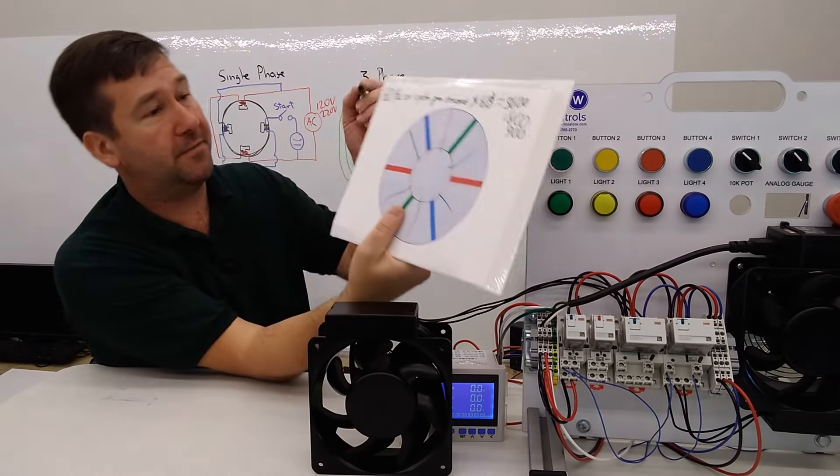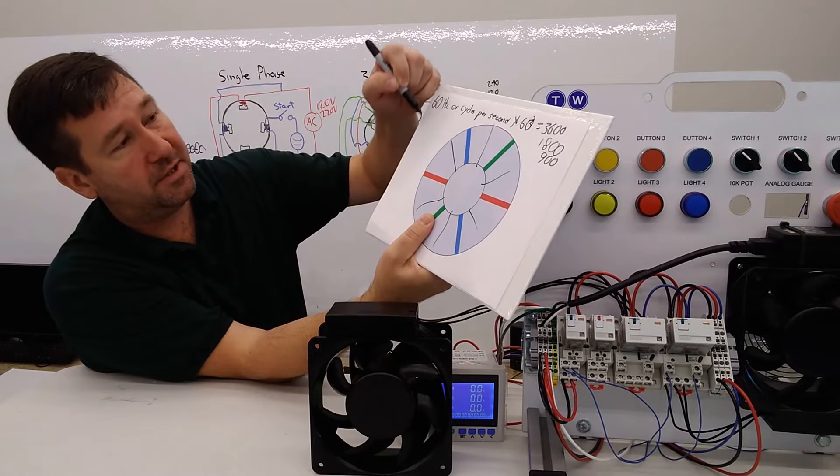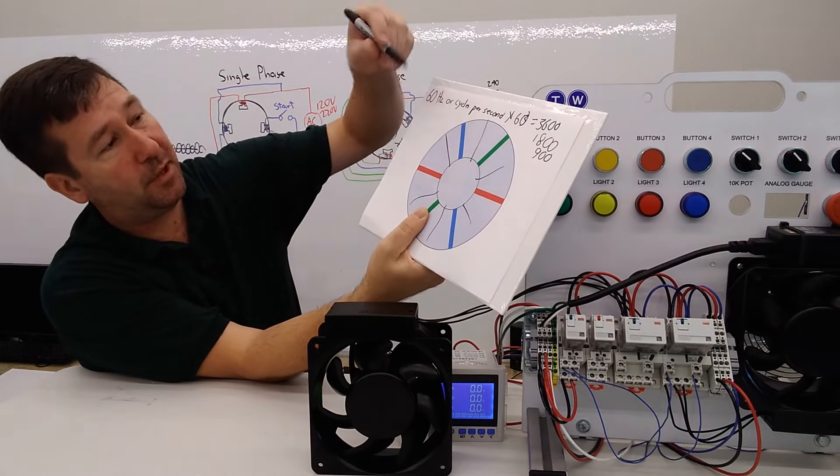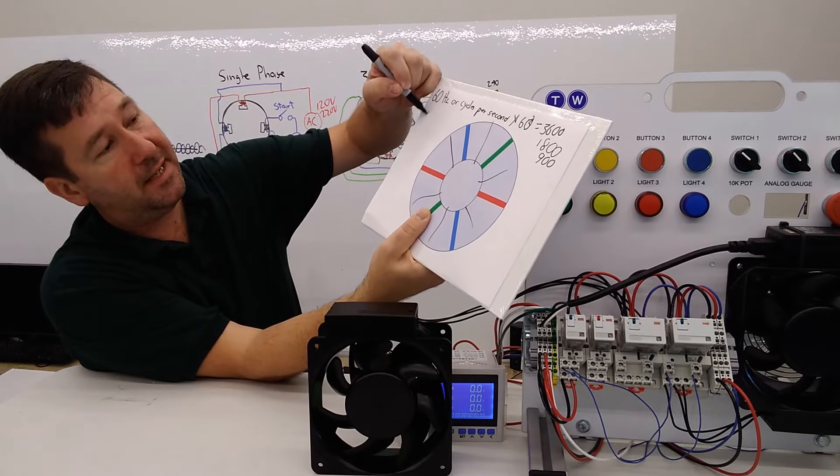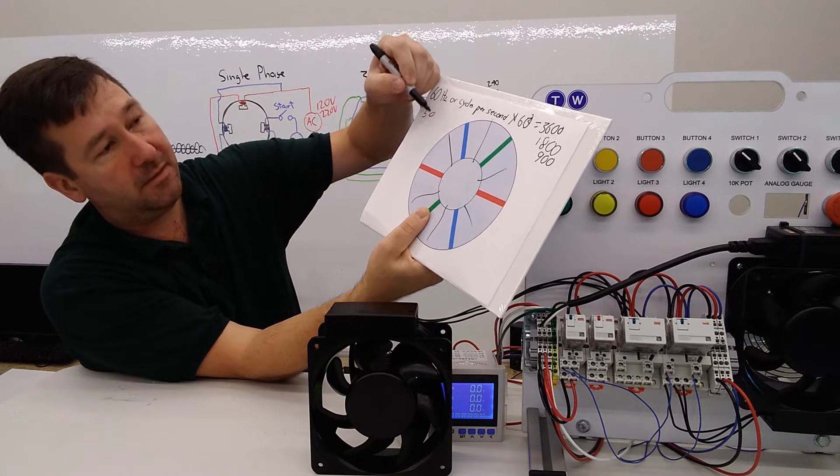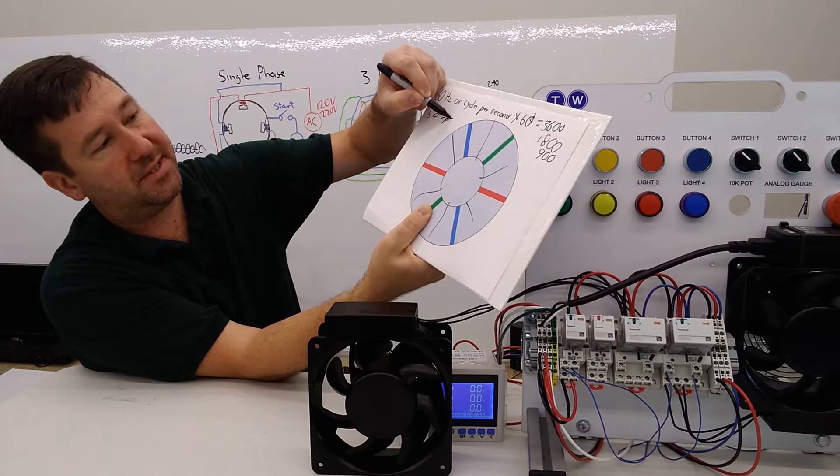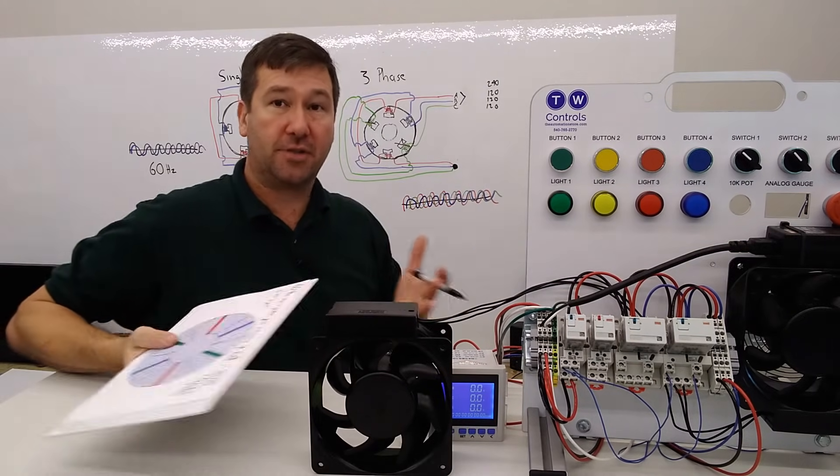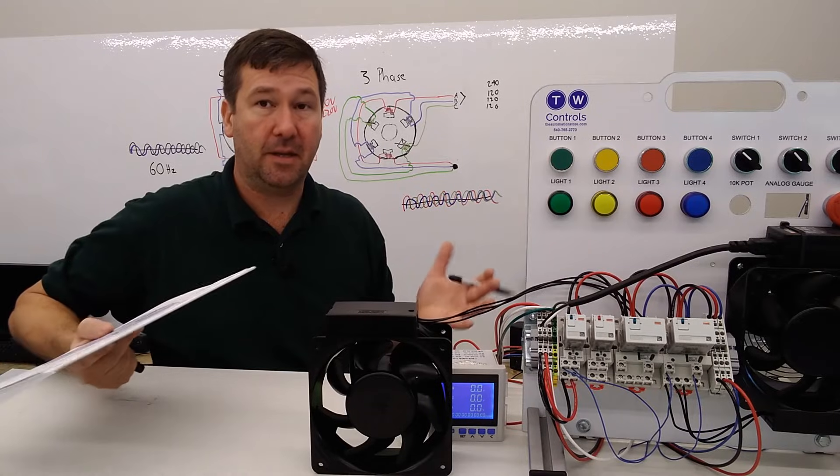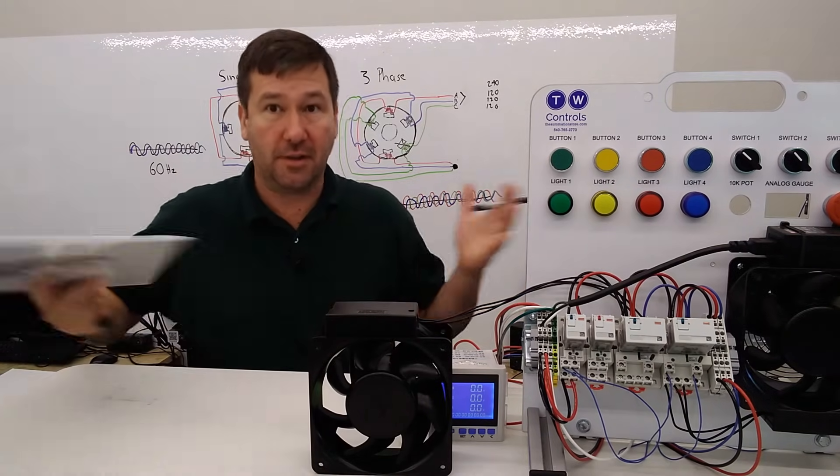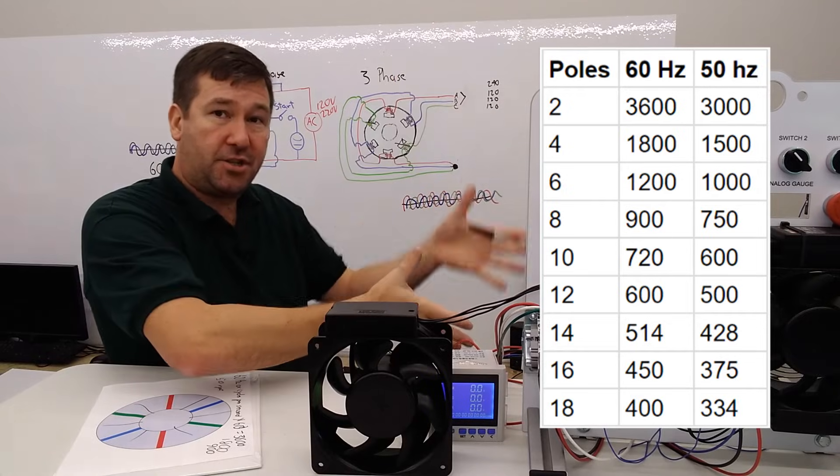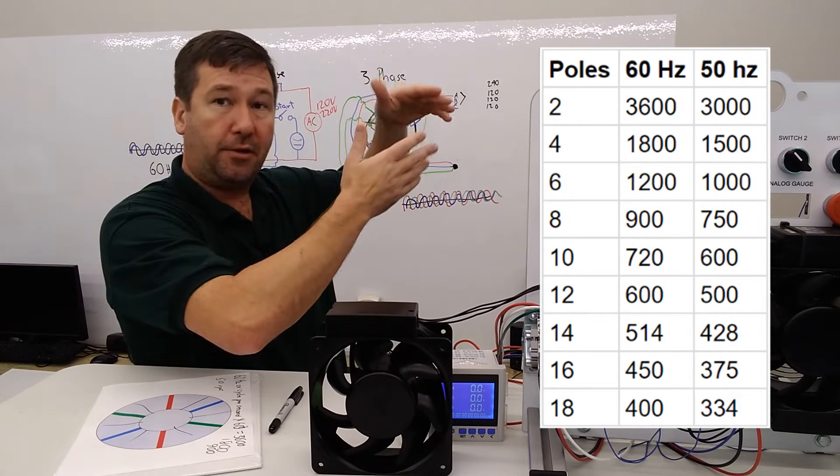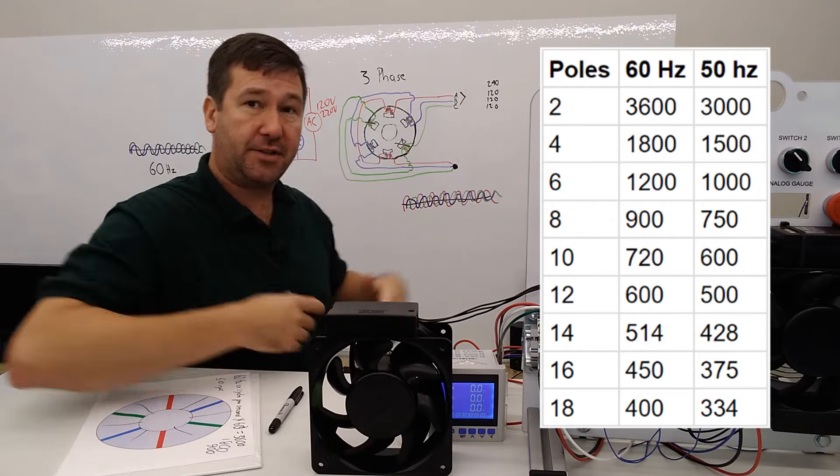Also, for the people in the 50 hertz world, all you would do is change this 60 to a 50. If we had a two-pole motor, then it would be going 50 revolutions per second, and that means that a 50 hertz two-pole motor is going to run 3,000 RPM, whereas a 60 hertz two-pole motor is going to run 3,600. Here's a really nice chart showing the RPM based on the number of poles and whether you have 50 or 60 hertz.